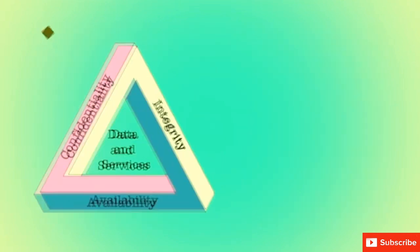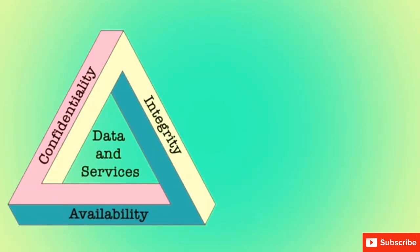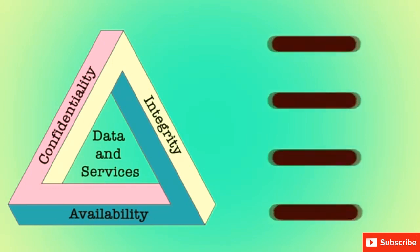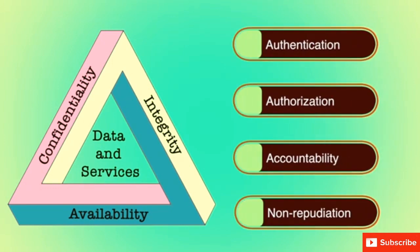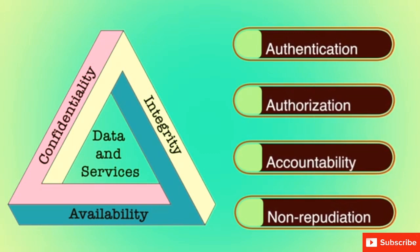Although the CIA triad is well established for defining security objectives, some in the security field feel that additional concepts are needed to present a complete picture. The four most commonly mentioned are authentication, authorization, accountability, and non-repudiation.